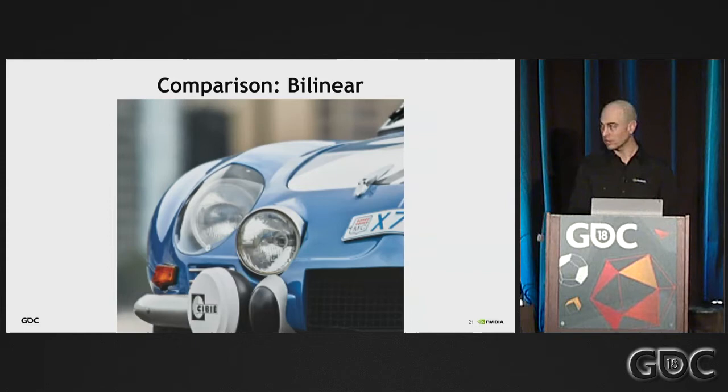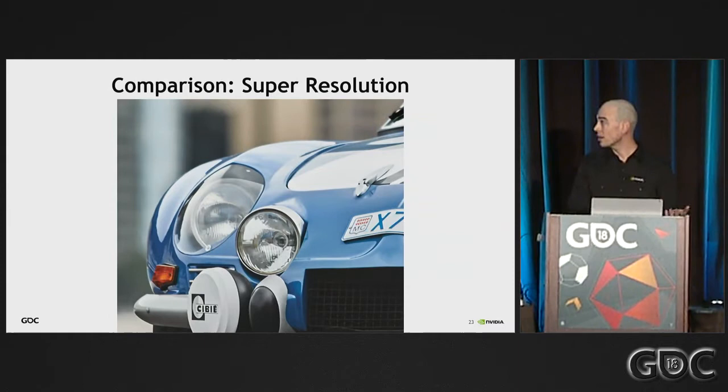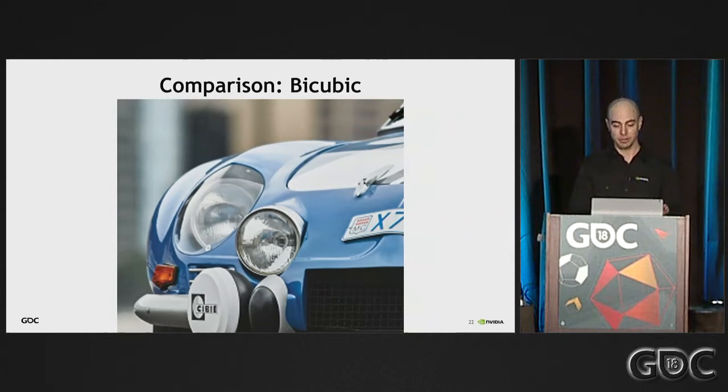Here's a comparison: bilinear filter, then bicubic filter, then the super-resolution tool. Especially around curves, it understands the font — even with blue text on white background, it doesn't average the two colors between them. It actually understands that X is an X and needs to be kept as a hard line. That's because it has a higher-dimensional representation of all the interesting features in the image.